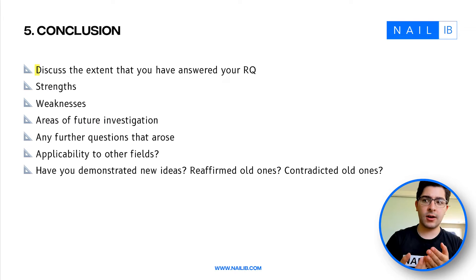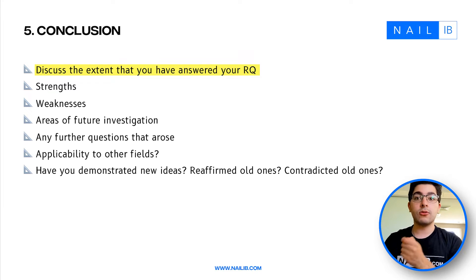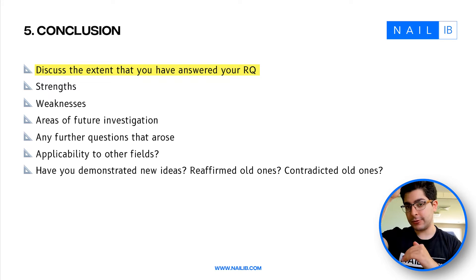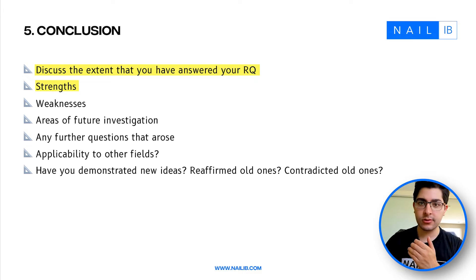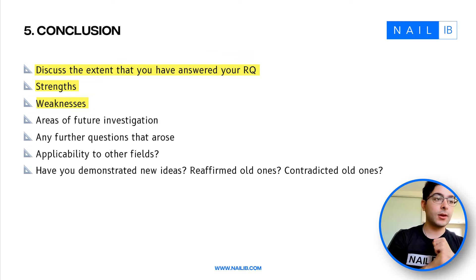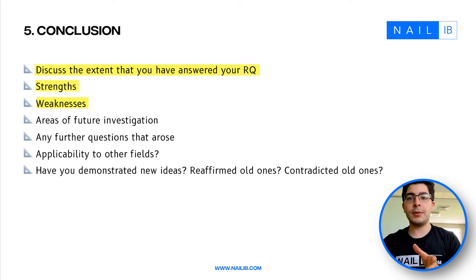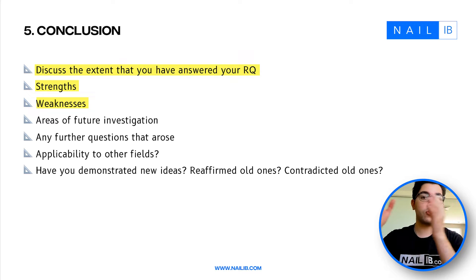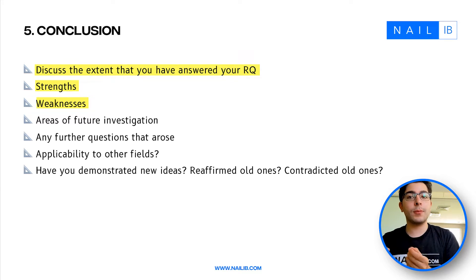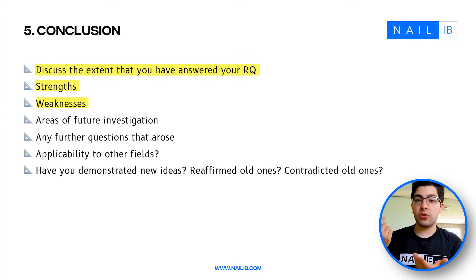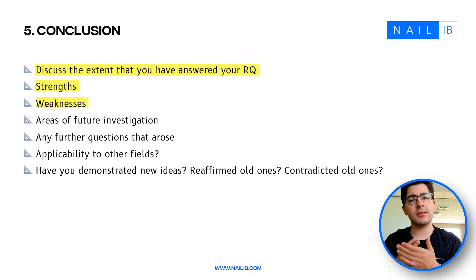In your conclusion, discuss the extent to which you have answered your research question. Evaluate how well you answered it — everything in the body should have been building toward that. Go through your strengths, your weaknesses, and any areas of future investigation. There will definitely be weaknesses in your extended essay — no essay is perfect. You might discuss too many assumptions, limited applicability to certain groups, confounding variables that could have interfered with your experiment, or inaccurate modeling.